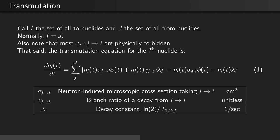This is all subtracted by the losses of the i-th nuclide, which are the concentration of the i-th nuclide times the microscopic absorption cross-section times the flux, minus the concentration of the i-th nuclide times its decay constant.